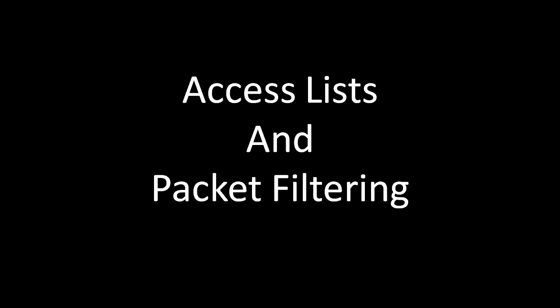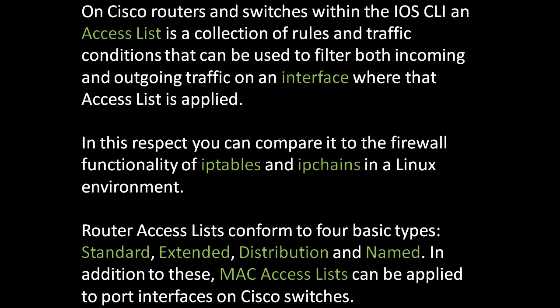Access Lists and Packet Filtering. On Cisco routers and switches, within the Internetwork Operating System command line interface, an access list is a collection of rules and traffic conditions that can be used to filter both incoming and outgoing traffic on an interface where that access list is applied. In this respect, you can compare it to the firewall functionality of IP tables and IP chains in a Linux environment. Router access lists conform to four basic types: Standard, Extended, Distribution, and Named. In addition to these, MAC access lists can be applied to port interfaces on Cisco switches.